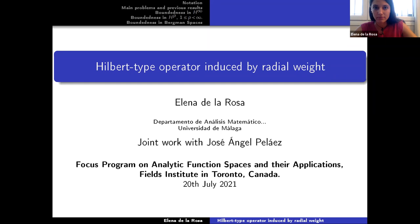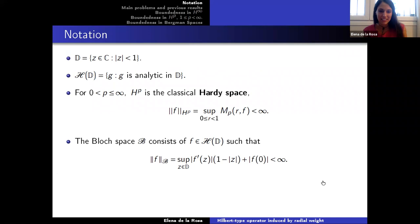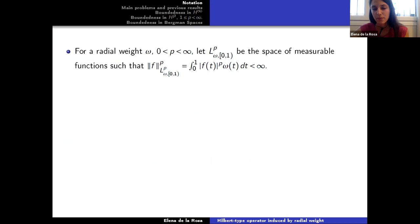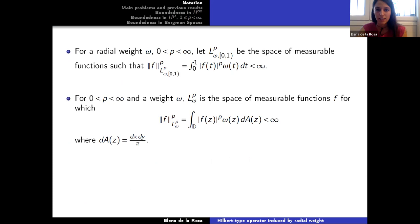I'm going to introduce some notation. The Bloch space is denoted by V, consisting of analytic functions such that the Bloch norm defined by the supremum is finite. For an integrable function defined on the interval zero-one that is non-negative, we can define an extension to the disk defined by omega of zeta equal to omega of the modulus of zeta, and this is called the radial weight. For a radial weight, we can define the space LP omega on zero-one and the Lebesgue space LP omega, both as spaces of measurable functions such that the respective norm is finite.